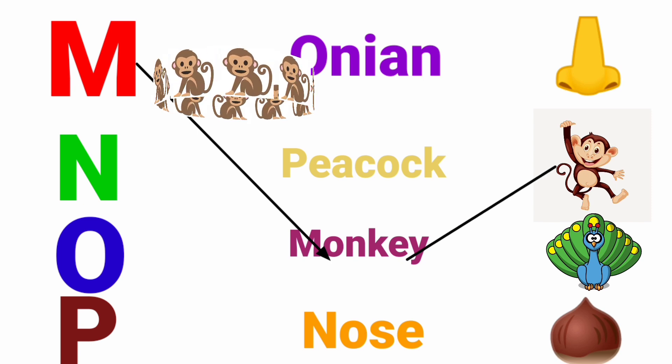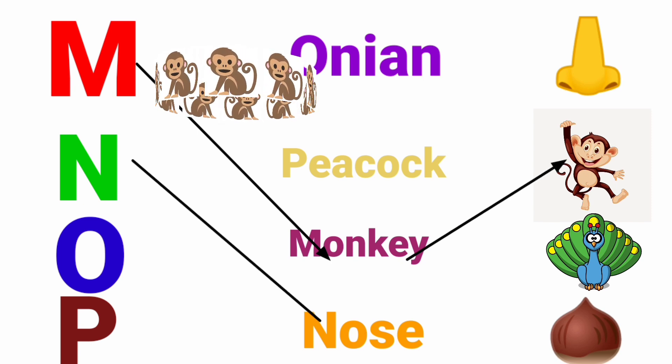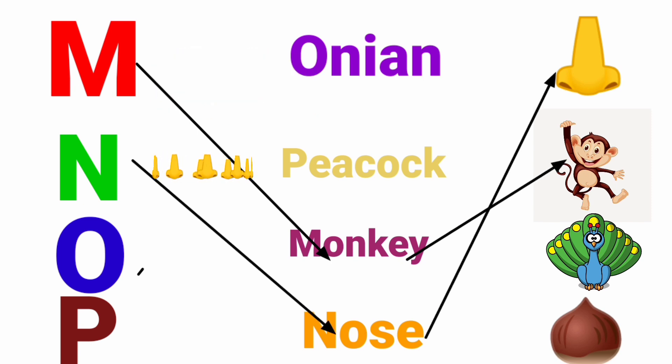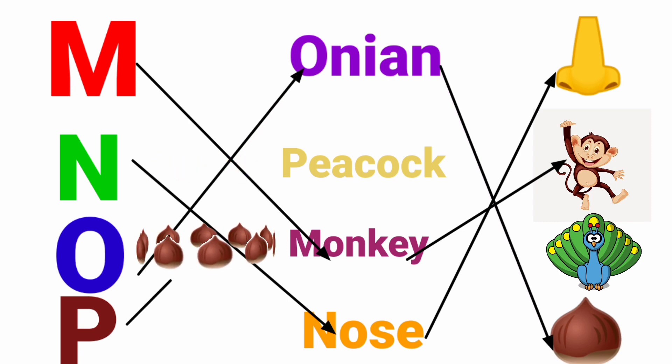M for Monkey. N for Nose. O for Onion. P for Peacock.